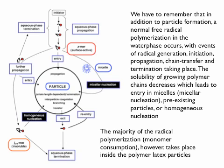Once I'm in the particle I can undergo propagation and termination, but also chain transfer. What would happen if I transfer to monomer? I get a monomeric styrenic radical. We know that styrene dissolves a little bit in water, so maybe the styrene radical can also dissolve a little bit in water and leave the particle. So not only do we have radical entry — putting a radical inside a particle — there's also potentially an exit event. A styrenic radical could leave a particle, called exit, and then maybe re-enter another particle, called re-entry.